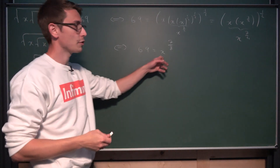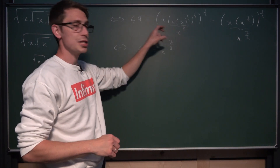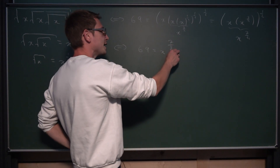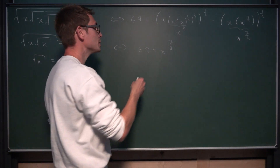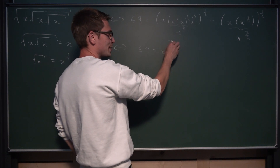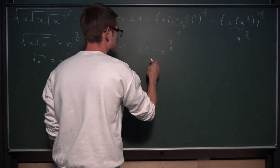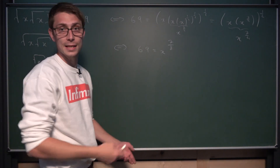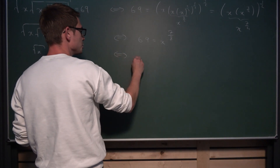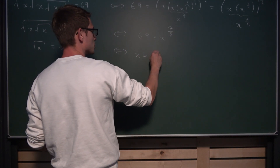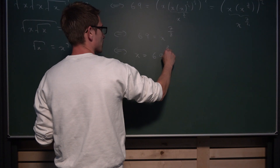Now in order to solve for x, we exponentiate both sides to the 8 divided by 7th power. By exponentiation rules, 7 over 8 times 8 over 7 equals 1, giving us x to the 1st power. And on the other side we get 69 to the 8 over 7th power. So our original problem yields that x is equal to 69 to the 8 over 7.